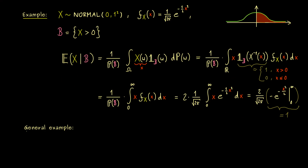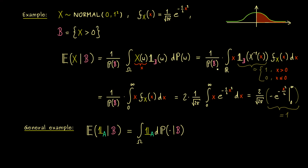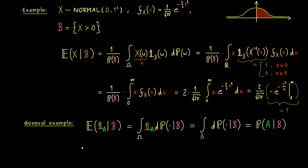Before the discrete example, let me show a very general abstract example. Consider the conditional expectation of a random variable given by the indicator function of a set A. Using our formula, the indicator function just changes the domain of integration, so we integrate the constant function 1 over the set A with respect to the conditional probability measure. This simply gives the conditional probability measure of A, which is our original conditional probability P(A|B). So the conditional probability can always be rewritten as a conditional expectation of an indicator function — keep that in mind.